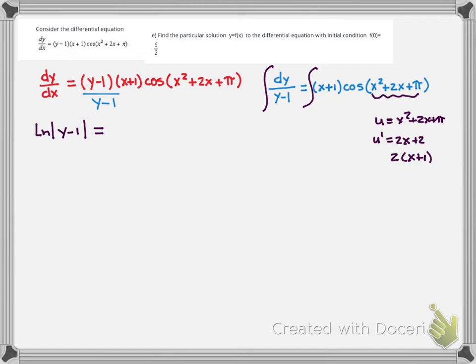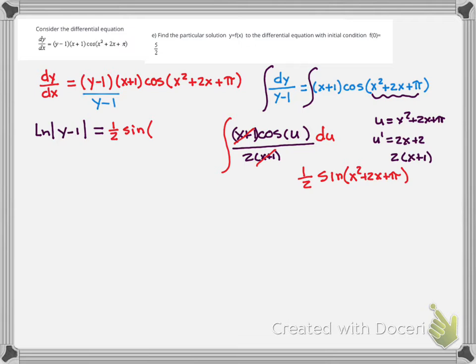So as we think about our shortcut u substitution, we're going to take x plus 1 times cosine of u and divide it by 2 times x plus 1. The x plus ones cancel out and that's what we're integrating. This is 1 half the integral of cosine is sine. We plug our u back in: x squared plus 2x plus pi.